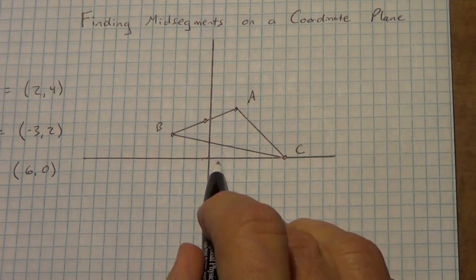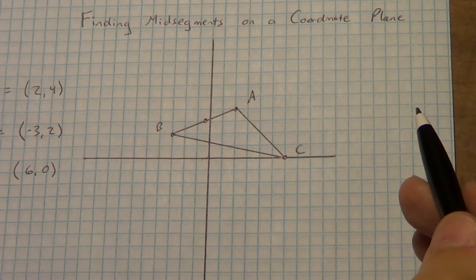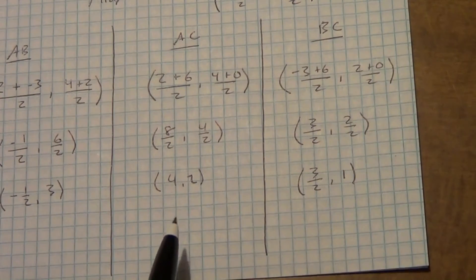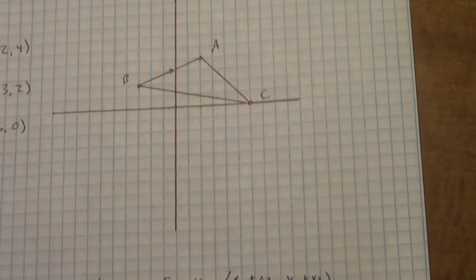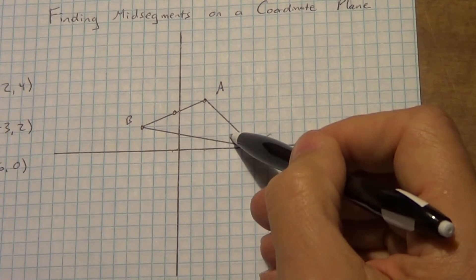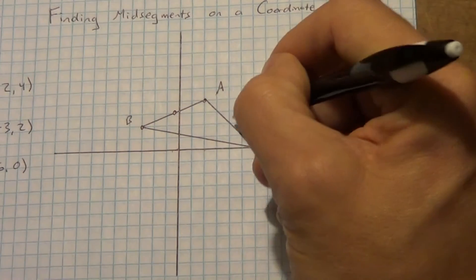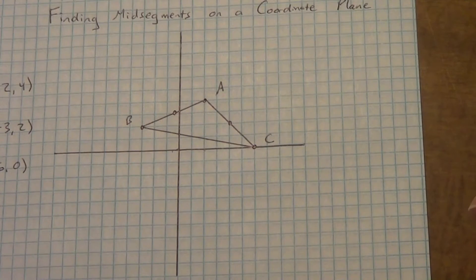Now I'm going to do the point for AC, which should be (4, 2). We definitely have a mistake — I had written (4, 1) down here, but that was a careless mistake. The point (4, 1) is not on a side at all and definitely not in the middle of a side. But if I go to (4, 2), it is right in the middle of a side. That makes much more sense.